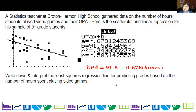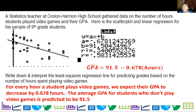How do I interpret that? Well usually we focus on the slope. So for every hour a student plays video games, we expect their GPA to decrease by .678 hours. Notice we say expect, we do not say that the GPA will decrease. This is just predicted. And then I'm saying the average GPA for students who don't play video games is predicted to be 91.5. I cannot say that the GPA will be 91.5 if they don't play video games. Because there's natural variation and you can see it in the data points right here.